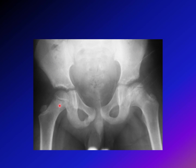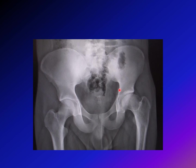In the healing stage, revascularization and remodeling have begun — the hip becomes oval rather than perfectly round compared to the normal side. In a fully resolved case, the patient is now skeletally mature and the pathology has reversed, but the patient was left with an oval head rather than a round one, as the disease completed its course.